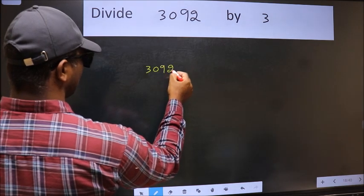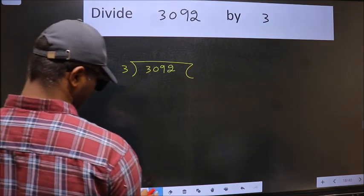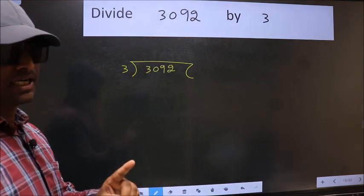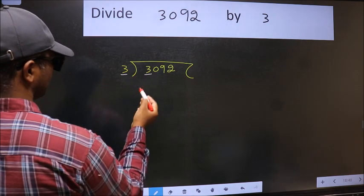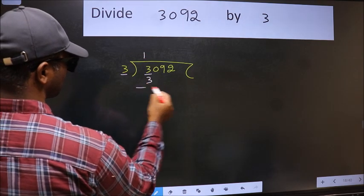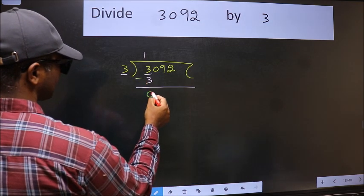3092 and 3 here. This is your step 1. Next, here we have 3 and 3 here. When do we get 3 in the 3 table? 3 once is 3. Now we should subtract. We get 0.